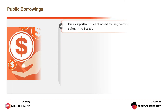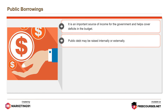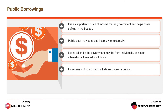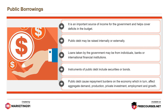The third instrument of fiscal policy is public borrowings. It is an important source of income for the government and helps cover deficits in the budget. Public debt may be raised internally or externally from individuals, banks, or international financial institutions. Instruments of public debt include securities or bonds. Public debt causes repayment burdens on the economy, which in turn affect aggregate demand, production, private investment, employment, and growth.